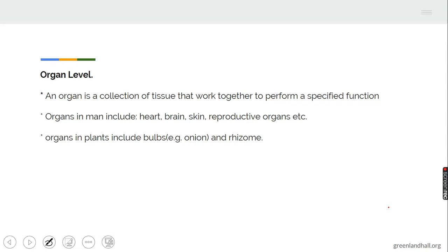Organisms that exist at the organ level. Organ is defined as a collection of tissue that work together to perform a specific function. Organs in man will include the heart, the brain, the skin, the reproductive organ, and so on. Organs in plants will have the bulb, onion and the rhizome. They are example of organs in plants.